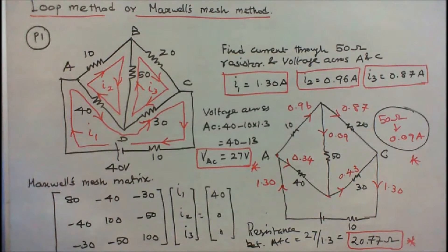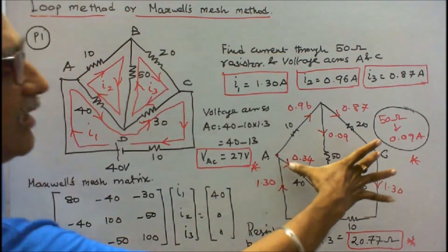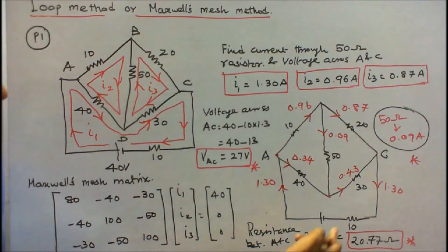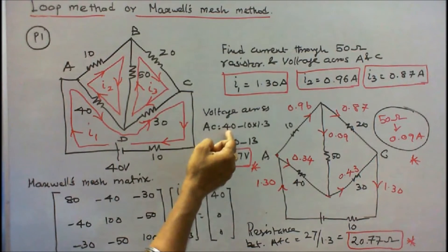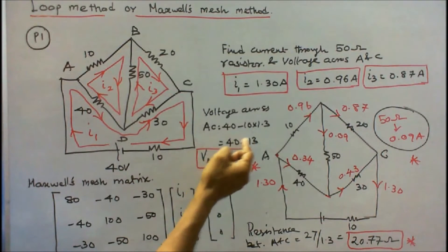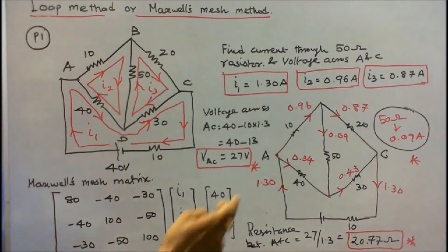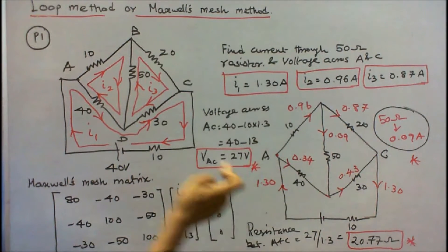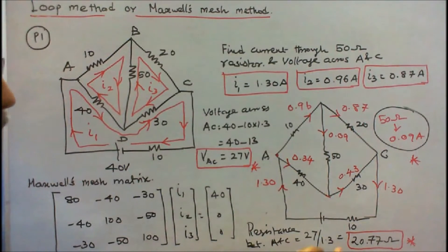Next I have to find the voltage across A and C. The source voltage is 40 volts. The current is 1.3 amps and source resistance is 10 ohm. So voltage across AC equals source voltage minus the source resistance voltage drop: 40 minus (10 × 1.3) = 40 minus 13 = 27 volts. The resistance between A and C is 27 divided by 1.3, equal to 20.77 ohms.